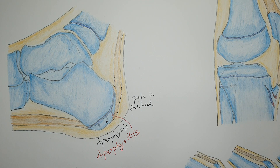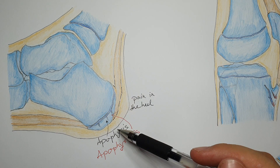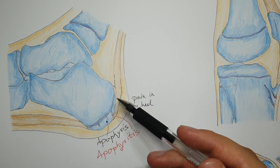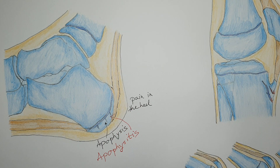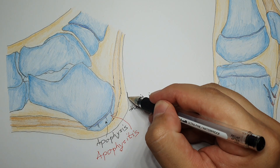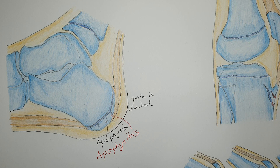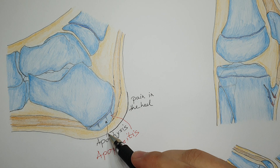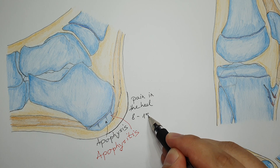These children will have heel pain, and if you look from the outside, there will be no changes on the skin, and on palpation you will not feel any bumps. But when you palpate in this region of the heel, there will be pain, and also on activity the children will feel pain. The children that get this are 8 to 15 years old.